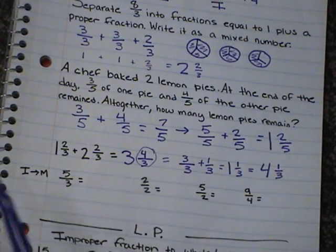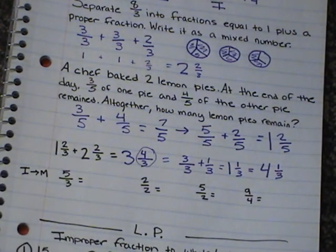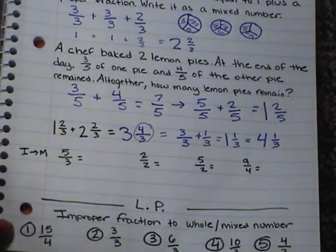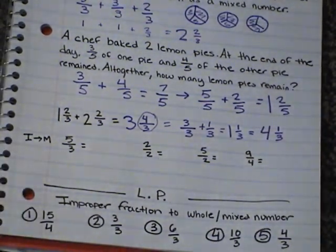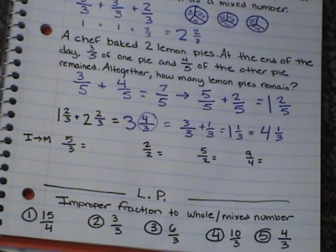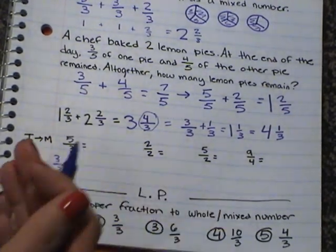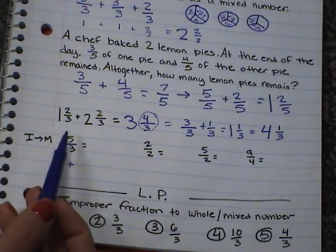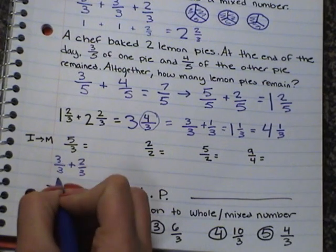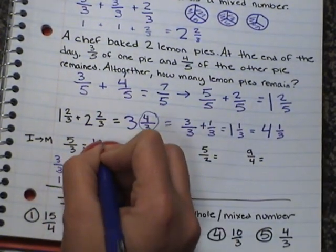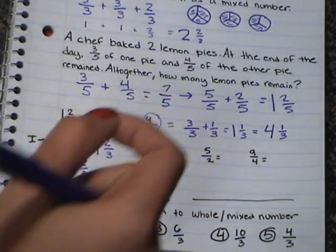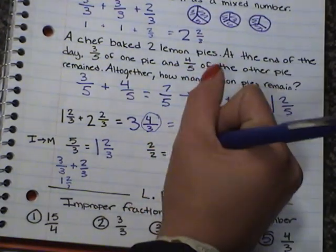Here we have improper fractions — any fraction that is greater than or equal to 1 is an improper fraction. We need to change all of these into mixed numbers. First, 5 thirds: my numerator is bigger, so I take out a whole — 3 thirds — and then I see how much is left. 3 plus 2 equals 5, so I have 2 thirds left over. That whole is 1, so this becomes 1 and 2 thirds. Next, 3 thirds: I take a whole out and it already is a whole, so this equals 1.